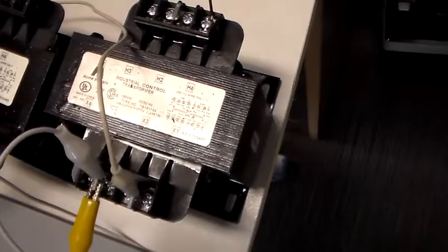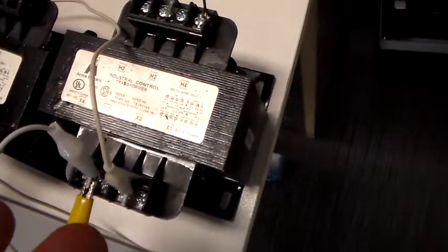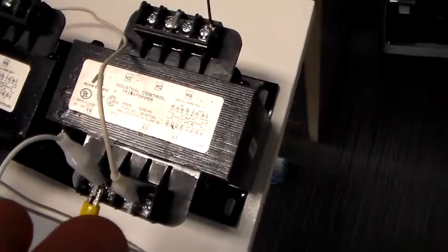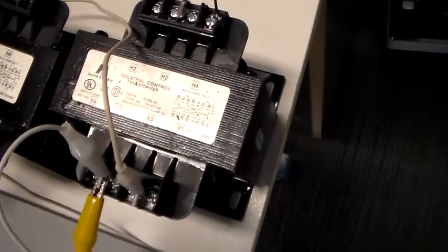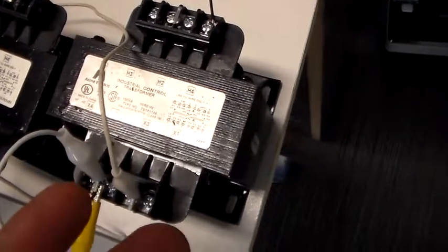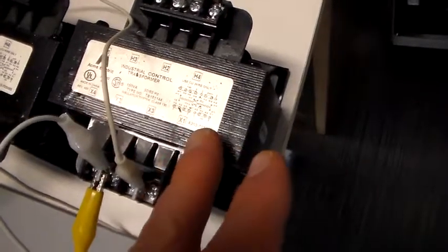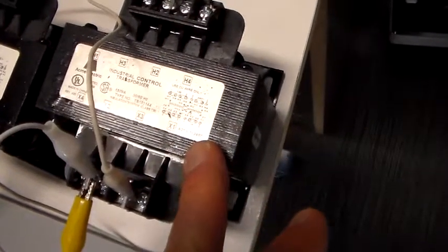They've designed that into the transformer from the factory, so that when it sags down due to the loading effect, you still get the 20 to 1 ratio that you're looking for. What that means is that the actual turns ratio in here is less than 20 to 1.